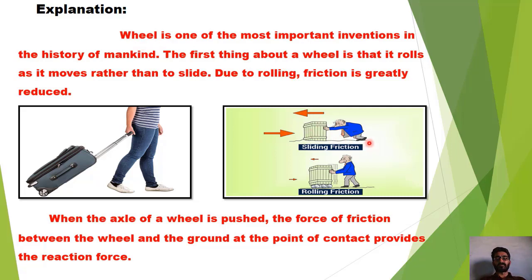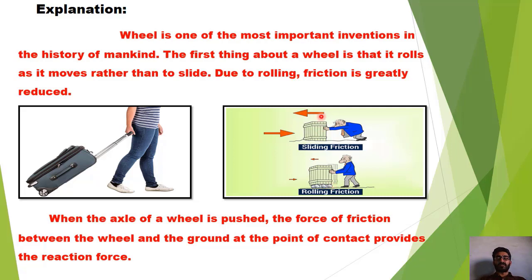یہاں figure میں دیکھ سکتے ہیں کہ ایک آدمی ہے جو ایک box کو surface کی اوپر slide کرواتا ہے، اسے box کو آگے کی طرف دھکیلنے کے لیے کافی زیادہ force لگانی پڑ رہی ہے کیونکہ sliding کے نتیجے میں کافی زیادہ friction produce ہو رہی ہے۔ اگر ہم اسی box کے نیچے wheel لگا دیں تو ہم کم force کی مدد سے اس box کو آگے کی طرف دھکیل سکیں گے کیونکہ rolling friction، sliding friction سے کم ہوتی ہے۔ Wheels کی مدد سے بہ آسانی اس box کو آگے منتقل کر سکتے ہیں۔